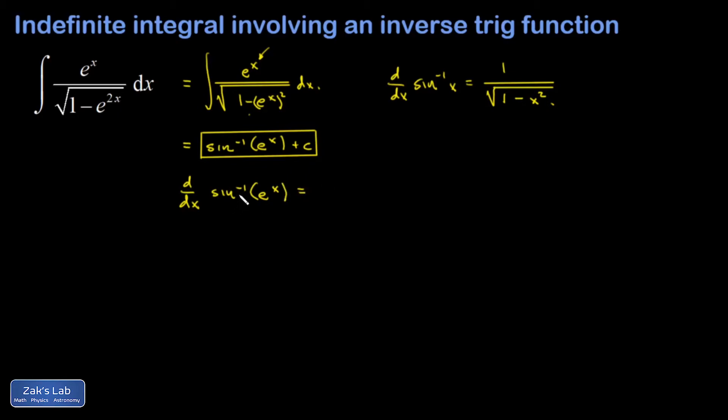And I have the derivative of the inverse sine function with respect to e to the x. And so I have 1 over square root 1 minus e to the x squared. And then the chain rule says you've got to tack on the derivative of e to the x with respect to x which is e to the x. And I end up with the integrand that I started with.